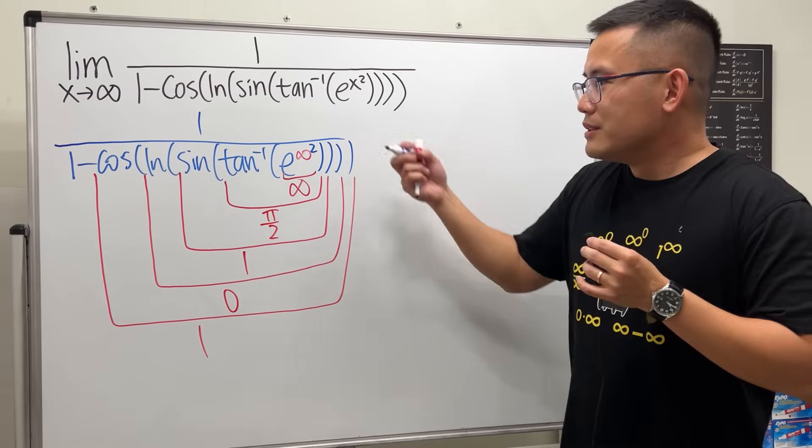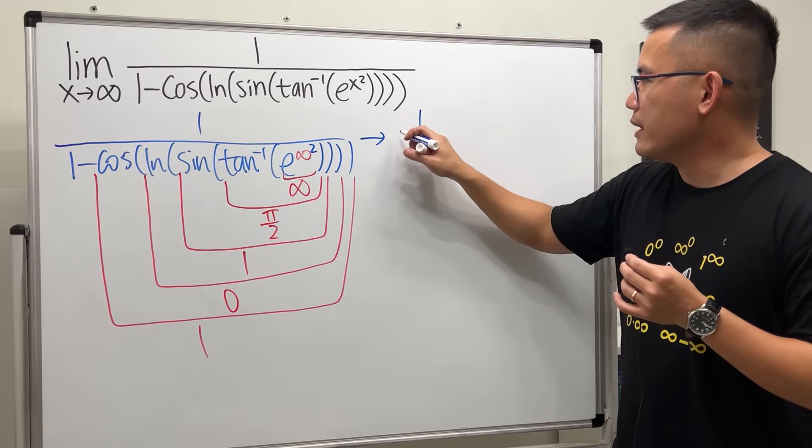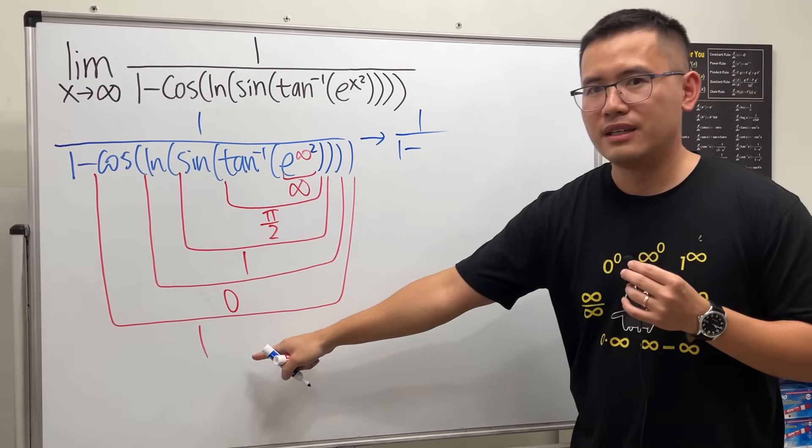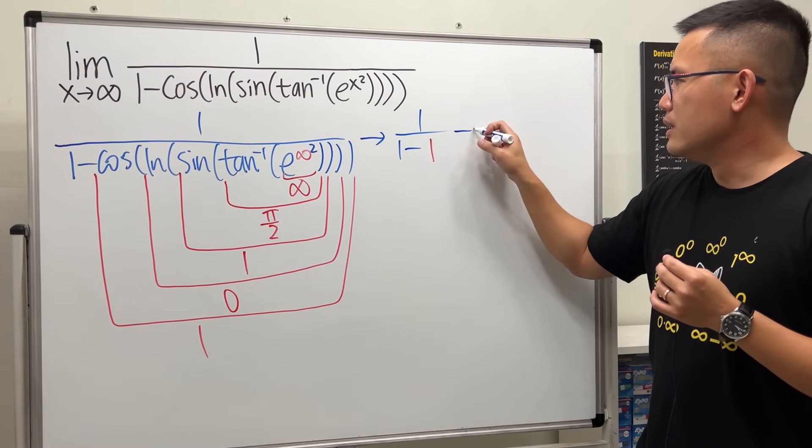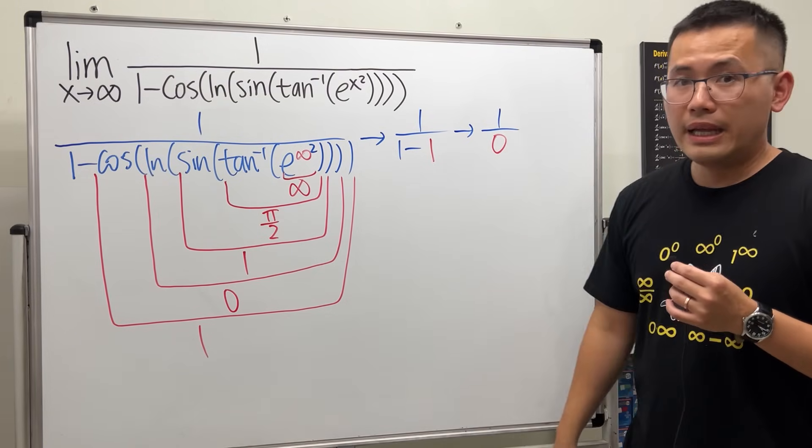And cosine of 0 is just equal to 1. So we're going to get that this will be approaching 1 over that 1 in blue minus this 1 in red. We know 1 minus 1 is 0, so we have a 0 on the bottom and a 1 on the top. And now what?